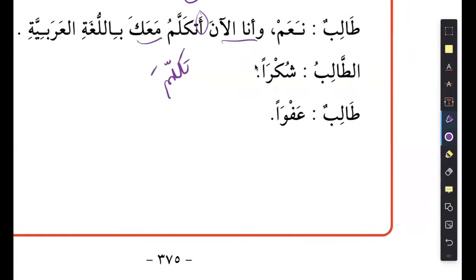Shukran - afwan. Here's another expression: when somebody says shukran, you say afwan. Afwan can also be used as excuse me - if you want to pass through someone or get someone's attention, you can say afwan.